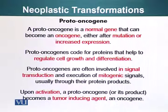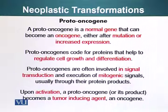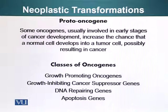Proto-oncogenes generally code for proteins that help regulate cell growth and differentiation. Proto-oncogenes are often involved in signal transduction and execution of mitogenic signals, usually through their protein products. Upon activation, a proto-oncogene or its product becomes a tumor-inducing agent, which is also referred to as an oncogene. Some oncogenes are usually involved in early stages of cancer development, increasing the chance that a normal cell develops into a tumor cell, possibly resulting in cancer.